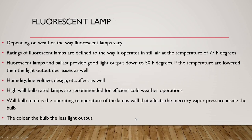Fluorescent lamps: ratings of fluorescent lamps are defined by the way they operate in still air at a temperature of 77°F. Fluorescent lamps and ballasts provide good light output down to 50°F. If the temperatures are lowered, the light output decreases as well.